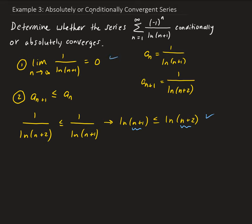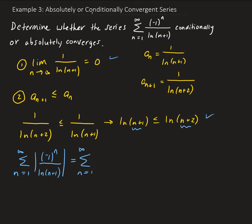So the limit goes to 0, and the (n+1)th term is less than or equal to the nth term. Now we need to check to see if this is absolutely converging or not. We're going to take the absolute value of the nth term. That gives us 1 over natural log of n plus 1. We can use the direct comparison test here.